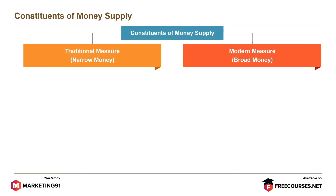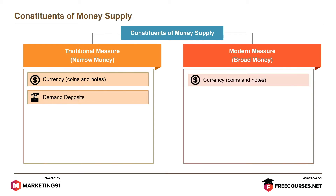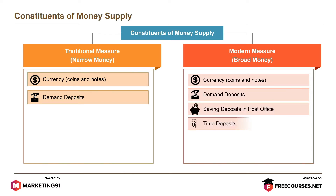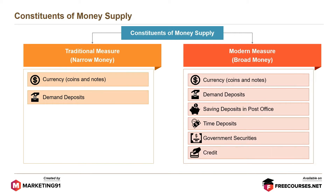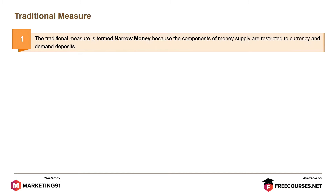There are two types of money supply: traditional measure and modern measure. Traditional measures include currency, i.e. coins and notes, and demand deposits. Modern measures include currency, coins and notes, demand deposits, saving deposits, saving deposits in post office, time deposits, government securities and credit. The traditional measure is termed narrow money because the components of money supply are restricted to currency and demand deposits.